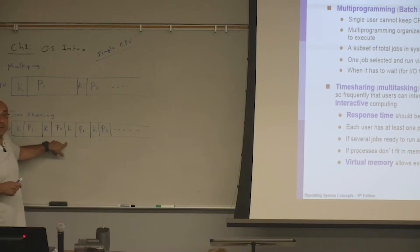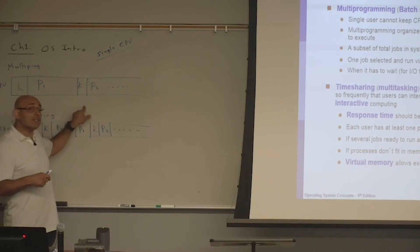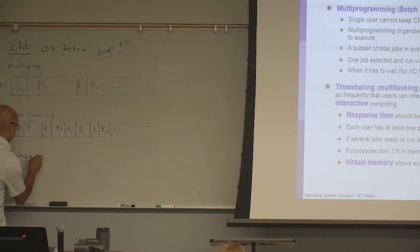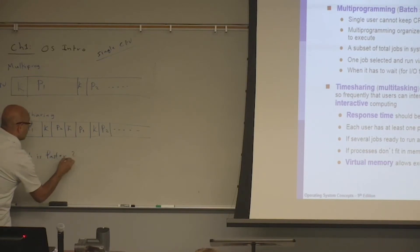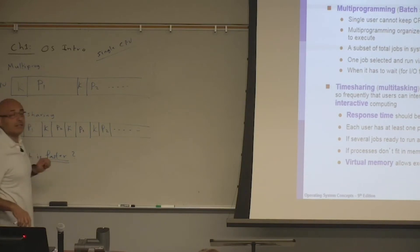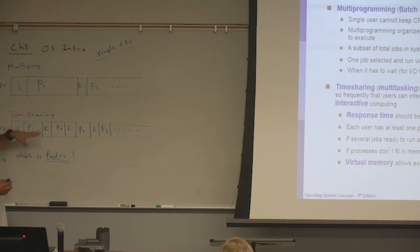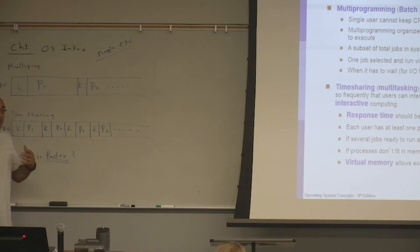So time-sharing is more responsive — this system is going to be more responsive to the user. But saying that time-sharing is faster is not true. It is not faster in fact. When you ask which one is faster, you have to define 'faster.' I can argue that multiprogramming is faster, and I can argue that time-sharing is faster. From the user's point of view, time-sharing feels faster.